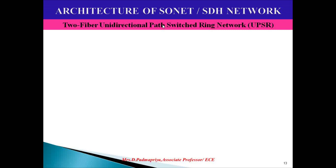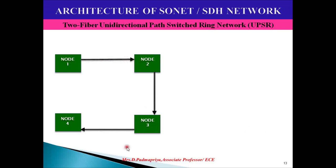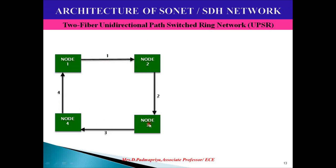In the unidirectional path switch ring network, consider four nodes — node 1, node 2, node 3, and node 4. Node 1 is connected to node 2 via one link, node 2 to node 3 via another link, and so on. The links are numbered 1, 2, 3, and 4, following a clockwise directional flow. For data flow from node 1 to node 3, the data flows in the clockwise direction using links 1 and 2.